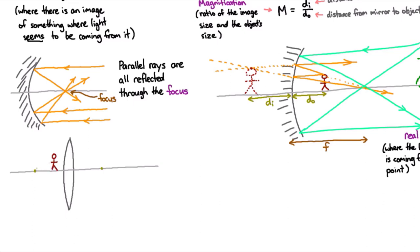A light ray that goes through a focus will go out parallel. A light ray that goes in parallel will go through a focus. You can see that these two rays appear to be coming from something back here, and so in this case we've got a virtual image of someone.